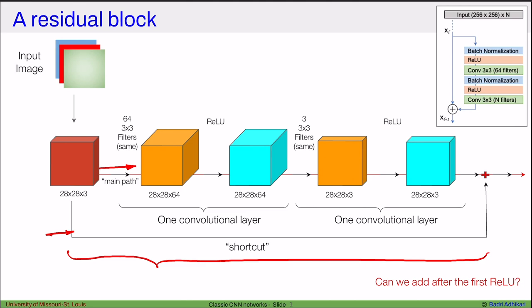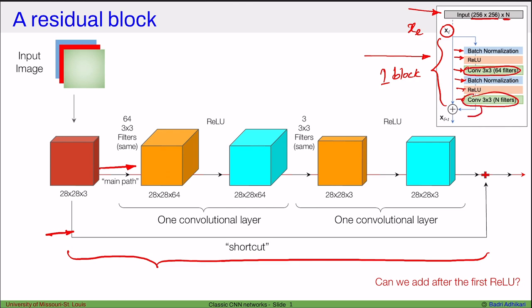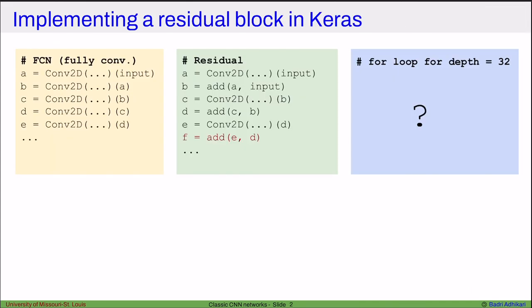This entire thing is one residual block, where here's the shortcut and here's the convolutional information flow. Such a residual block is also represented using block diagrams. We have this input volume of certain dimensions like 256 by 256 by N, which is usually represented as X_l. This entire thing is one residual block, which goes through batch normalization, ReLU activation, and then a convolution layer, then another batch normalization, ReLU, and conv2D or conv3D. So basically these are two convolutions, and what comes out gets added to the original input X_l to give you the output for the next residual block. Now let's talk about how to implement the residual block in Keras.